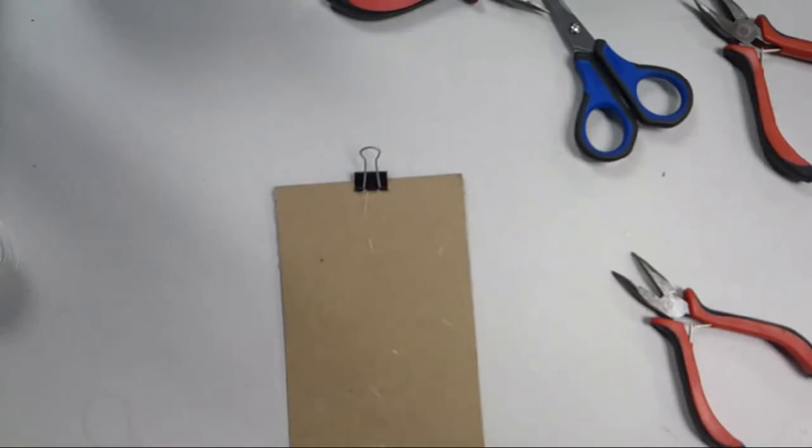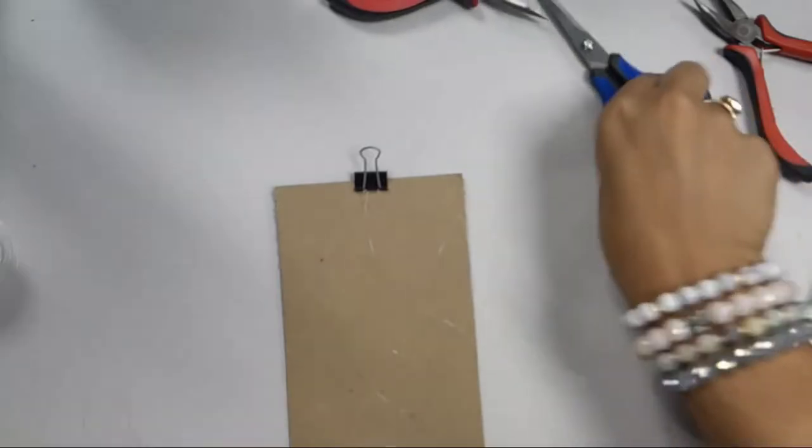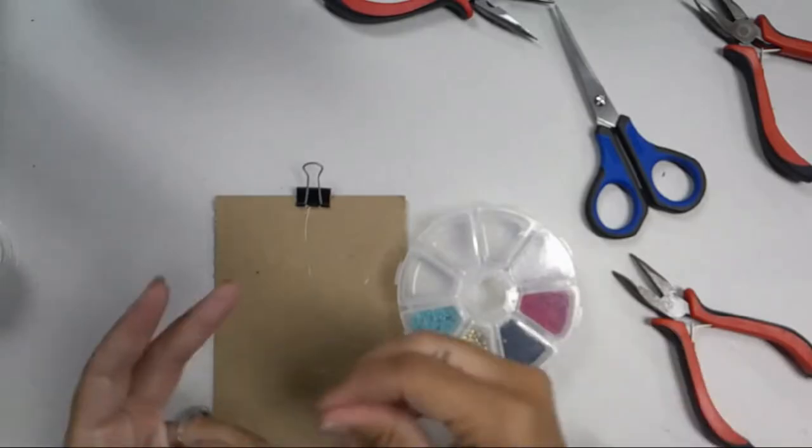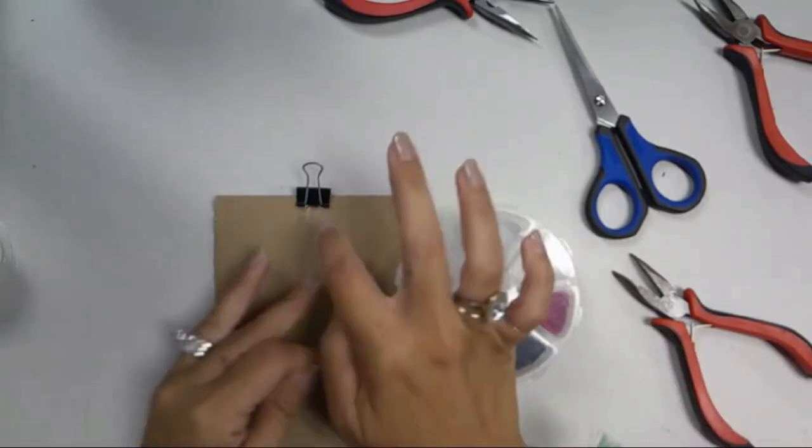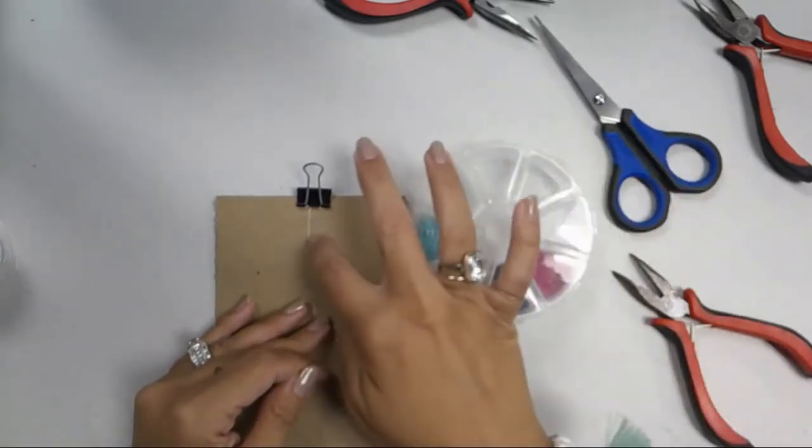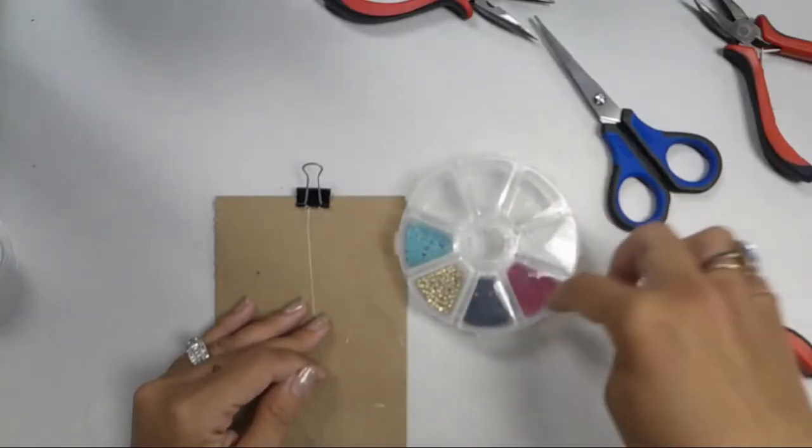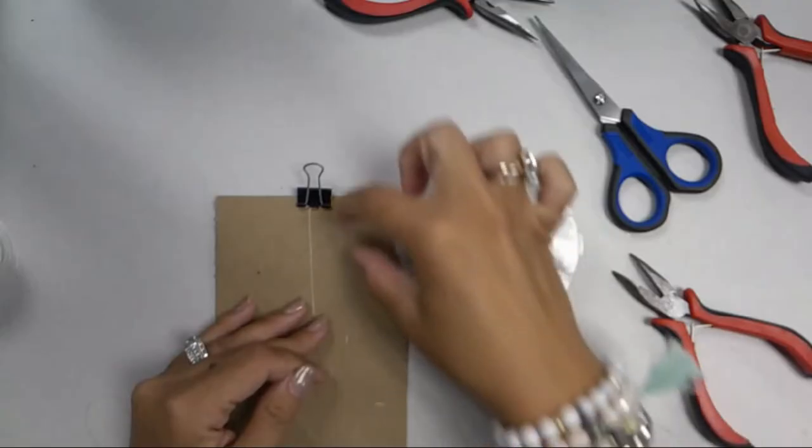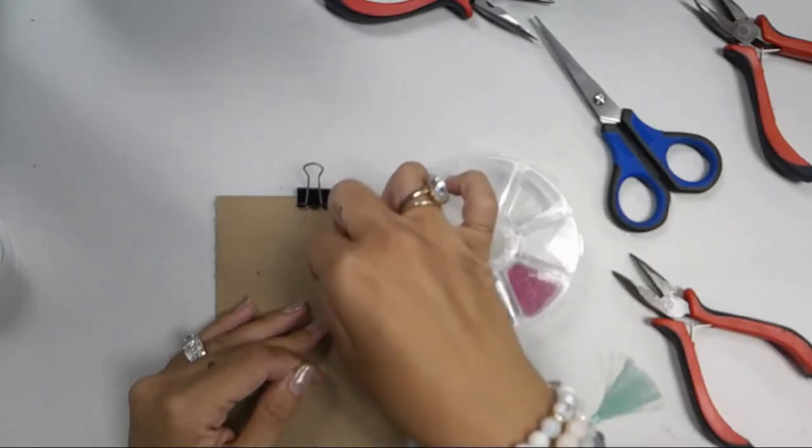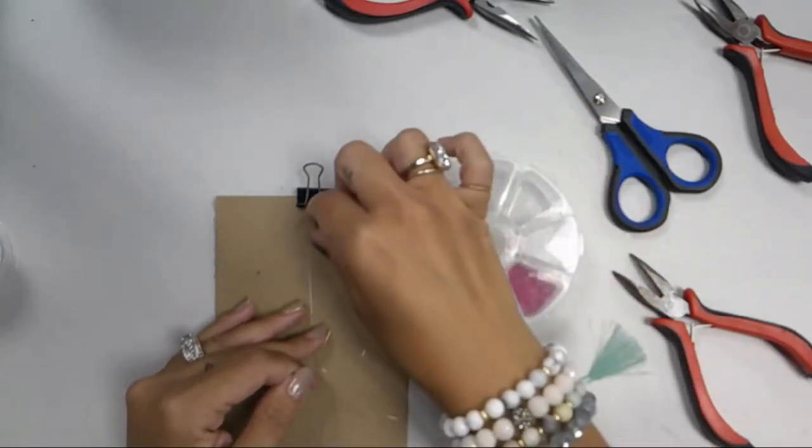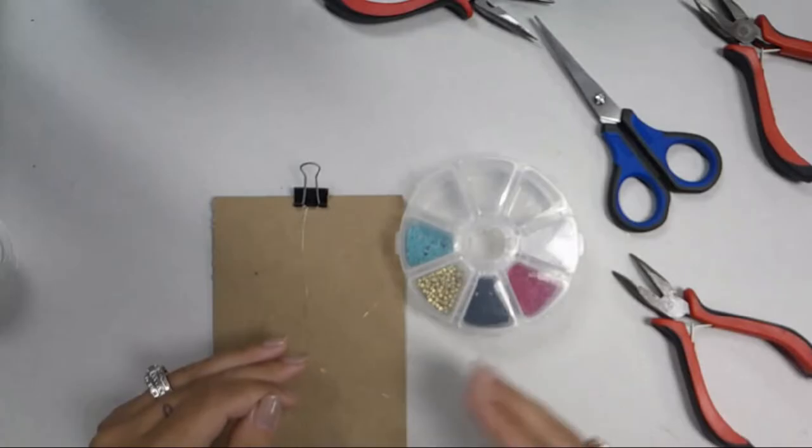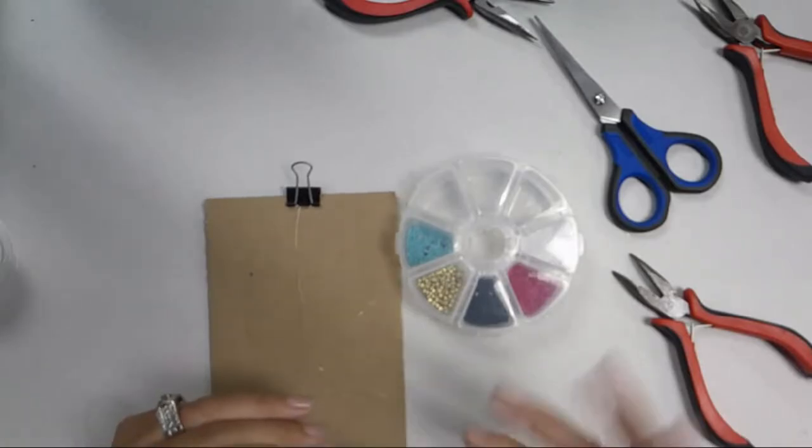So what you're going to do now is begin putting your beads onto your fishing line. I always tell my kids they can make a pattern. So if they wanted to choose five colors and alternate them, so turquoise, gold, black, fuchsia, white, and then repeat that pattern, or they can do color blocking. And so color blocking is where you do a certain amount of the same color beads for a certain distance.